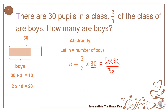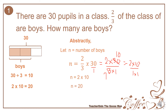So I'll divide 30 and 3 by 3: 30 divided by 3 is 10, and 3 divided by 3 is 1. So I have 2 times 10 all over 1 times 1, which simplifies to just 2 times 10, which is equal to 20. So therefore, there are 20 boys in a class.